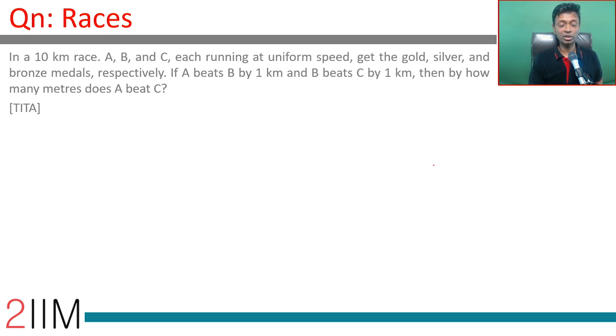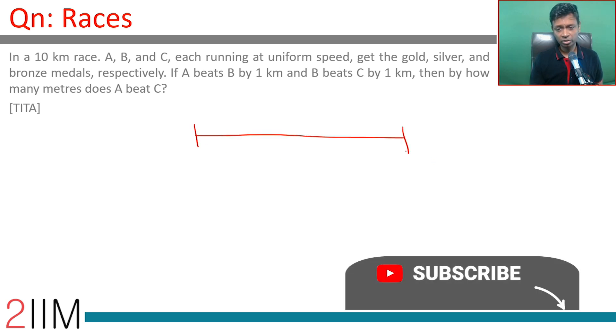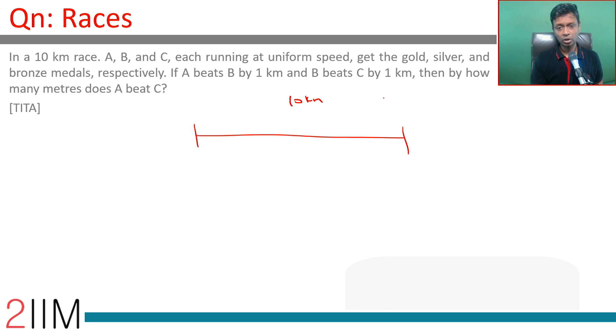If A beats B by 1 kilometer and B beats C by 1 kilometer, that means in this 10 kilometer race, when A, B, and C start here, when A finishes, B has done only 9 kilometers.